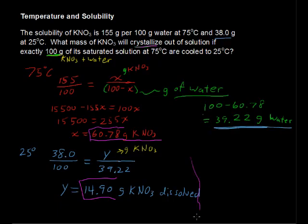So, real quickly over here, we've got 60.78 minus 14.90 and I'll round now because we should use three significant digits, and we come to a 45.9 grams of KNO3 crystallizing out.